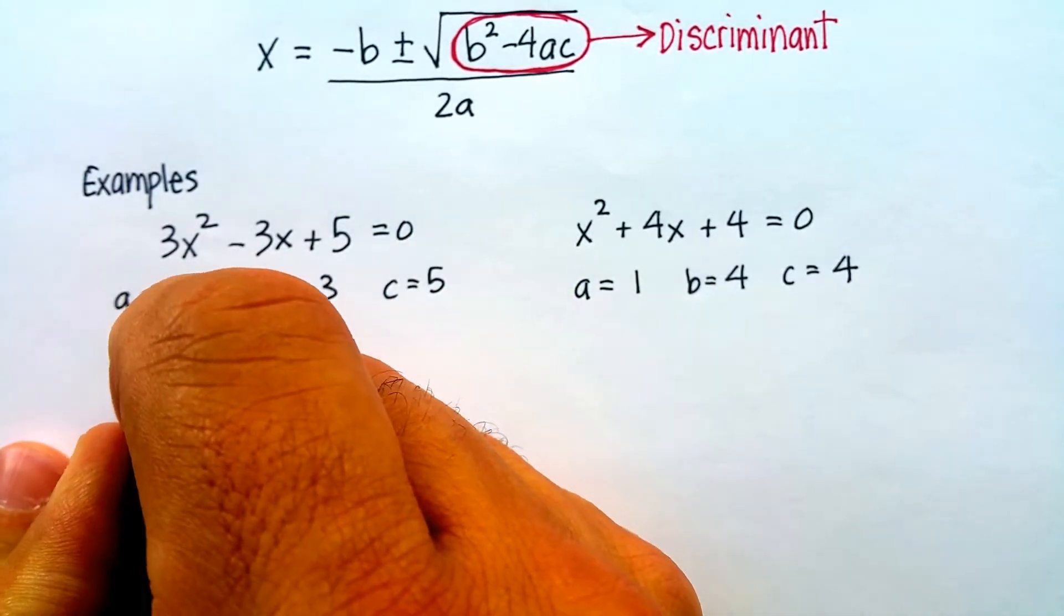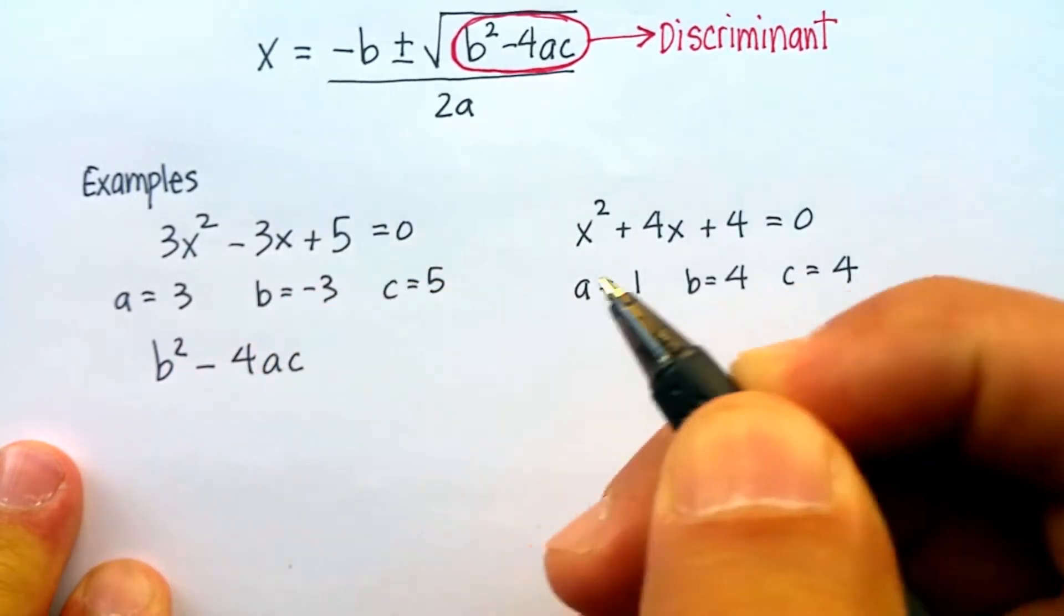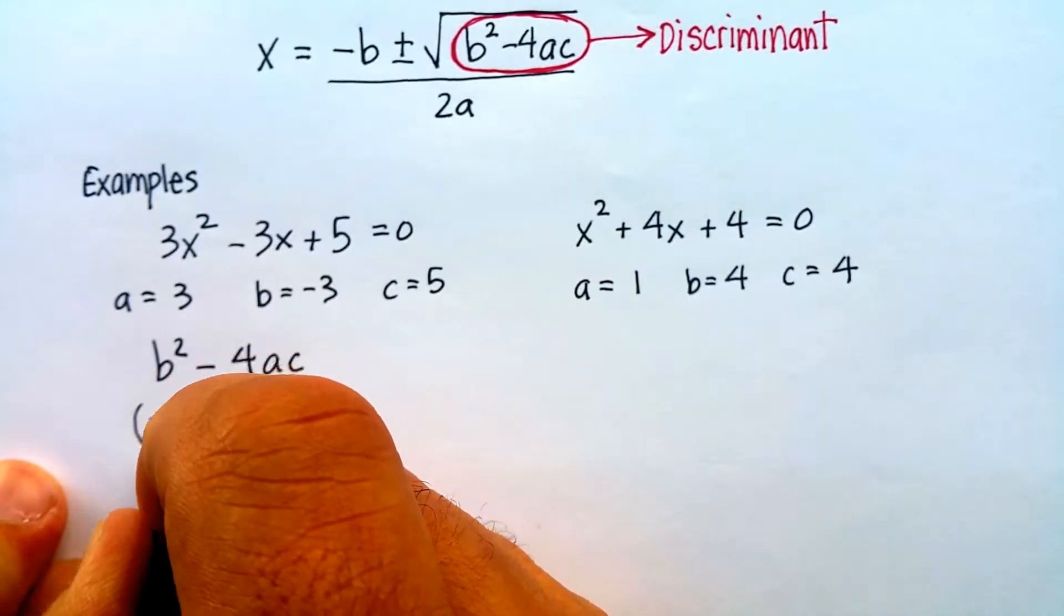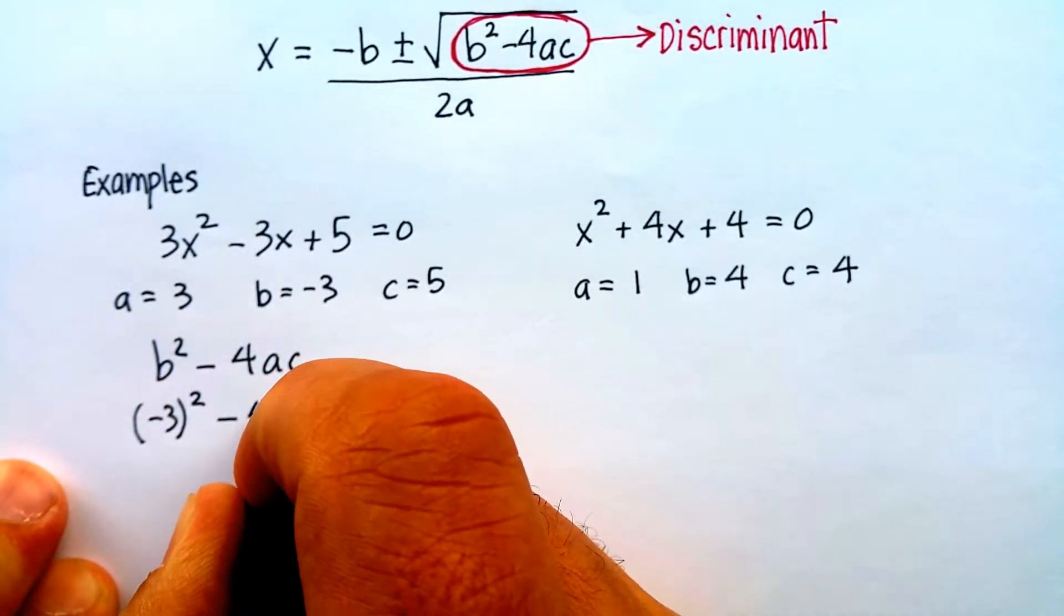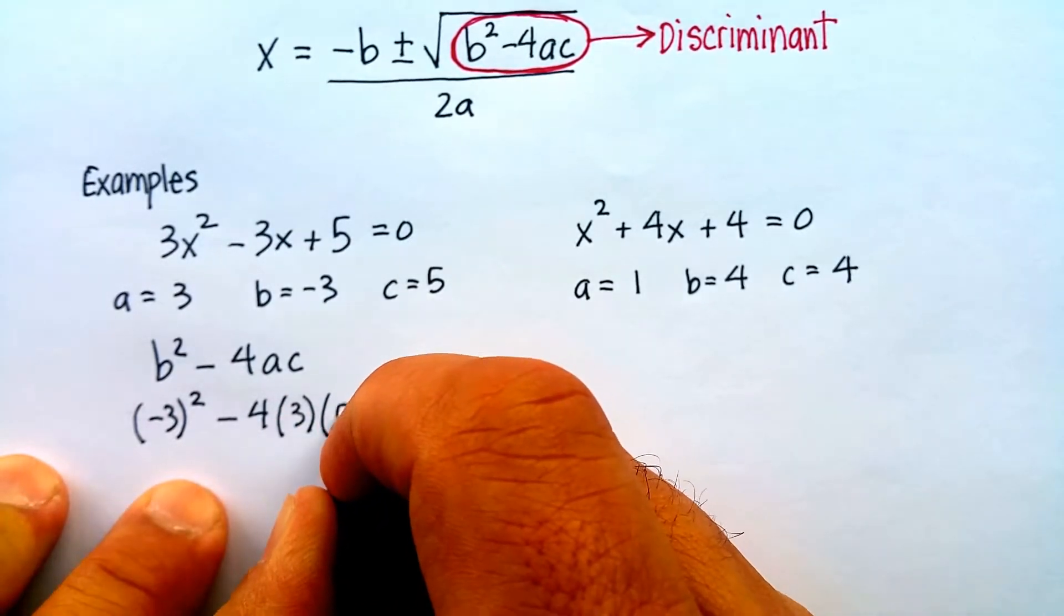So let's put it into the formula, b squared minus 4ac. Now, the b happens to be negative 3, so put it in there. Minus 4 times a, which again is 3, and c, which is 5.